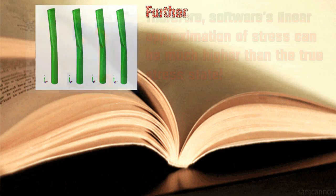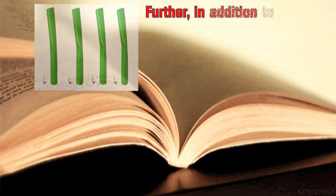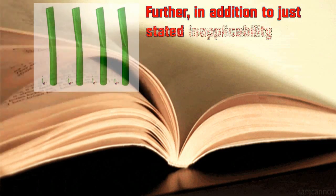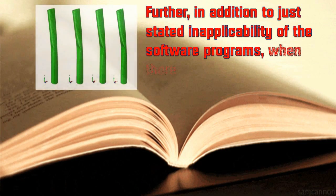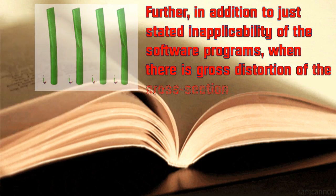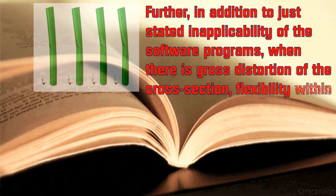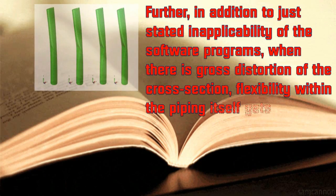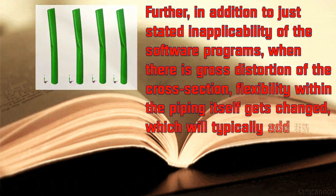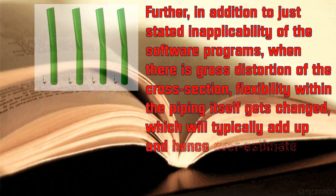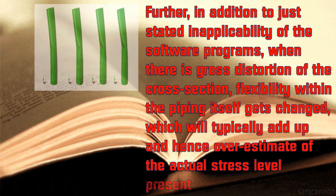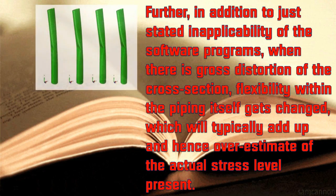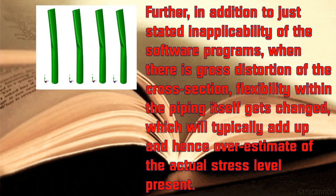Further, in addition to the just-stated inapplicability of the software programs, when there is gross distortion of the cross section, the flexibility within the piping itself gets changed, which will typically add up and hence overestimate the actual stress level present.